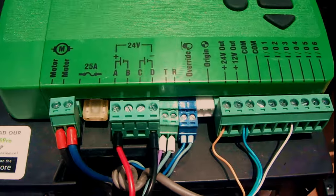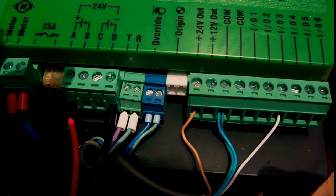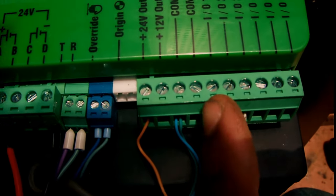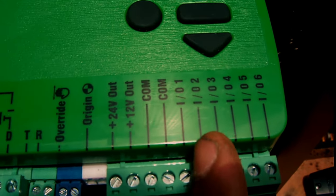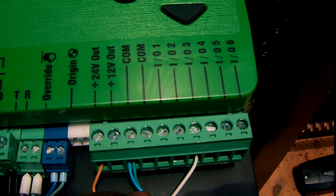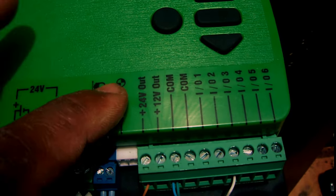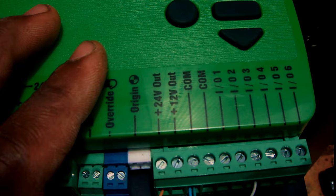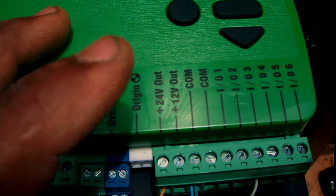The connection is a big difference now on the D5 Smart. Your IO3 port is for the photocell. Also on the same board we have plus 24 volt out, plus 12 volt out, and two common ports.